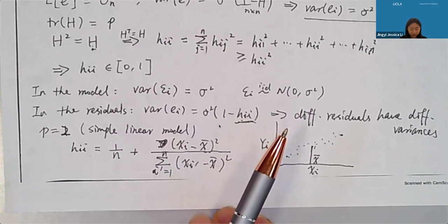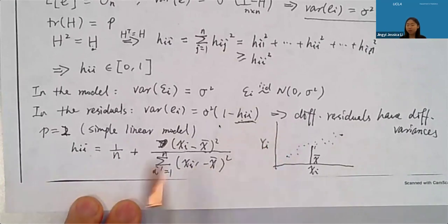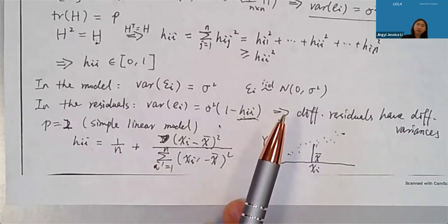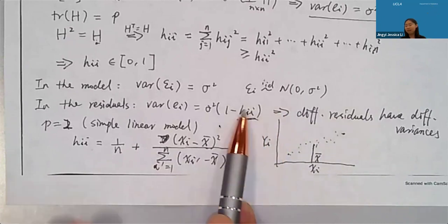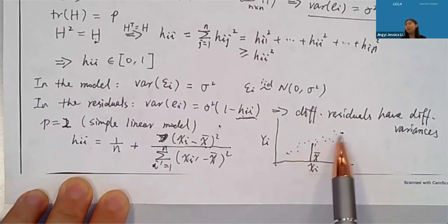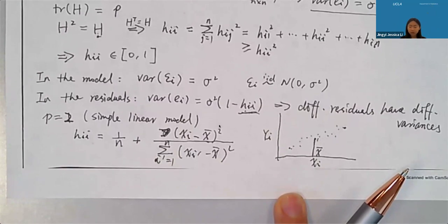H_ii is called leverage — the potential influence of observation i on the overall trend fitting. Observations with large H_ii (far from x_bar) have larger leverages. Having large leverage doesn't mean the observation is bad; it just means it has more potential to influence the model fit. The middle observations do not influence the line fitting as much, which intuitively makes sense.